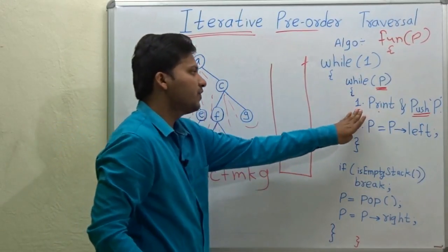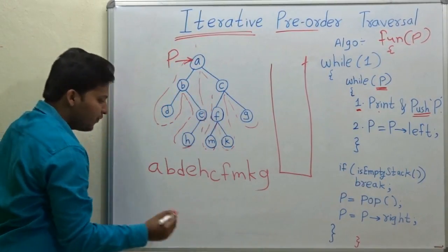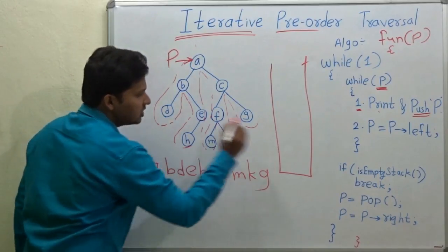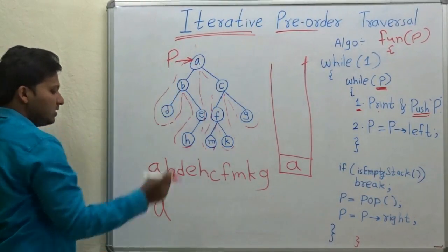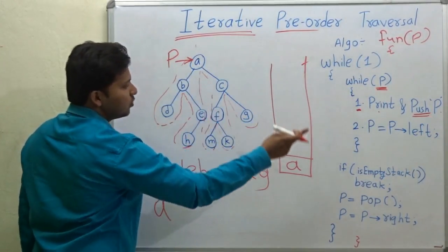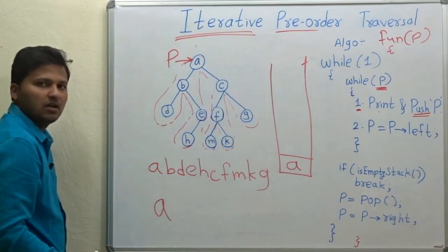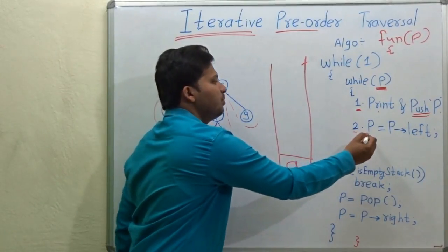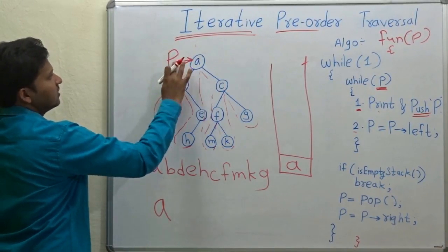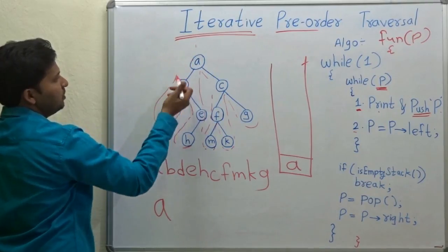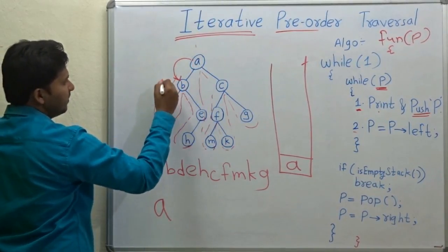The first statement is print and push p. Whenever you visit a node, you print it and push it onto the stack. p points to a, so we print a and push a onto the stack. Then p moves to p's left child, which is b.